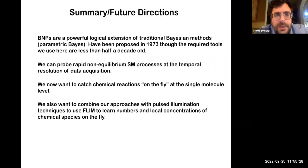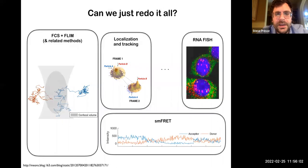So in summary, Bayesian nonparametrics are a powerful logical extension of traditional Bayesian methods. They were proposed in 73, though many of the tools we use honestly are less than half a decade old. We can now probe rapid non-equilibrium single molecule processes at the temporal resolution of data acquisition. The goal is ultimately to catch chemical reactions on the fly at the single molecule, single photon level. And we're ultimately thinking of even increased generalizations of the methods we're talking about here, and particularly even trying to deal with aberrated spots as we try to do this in vivo.